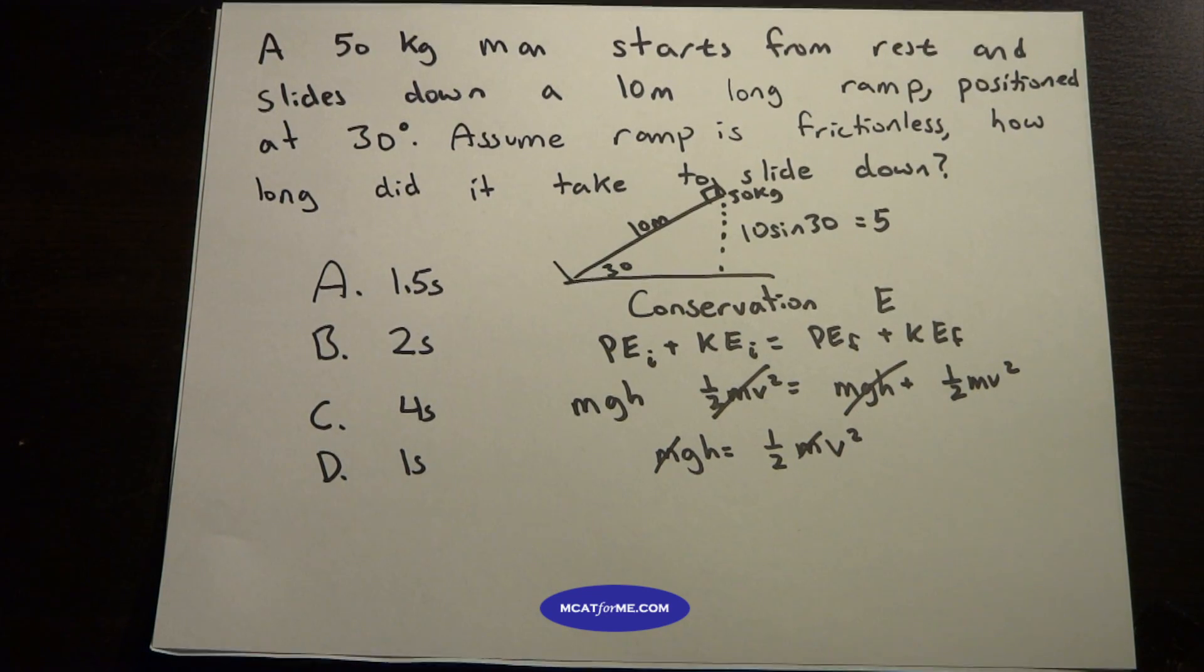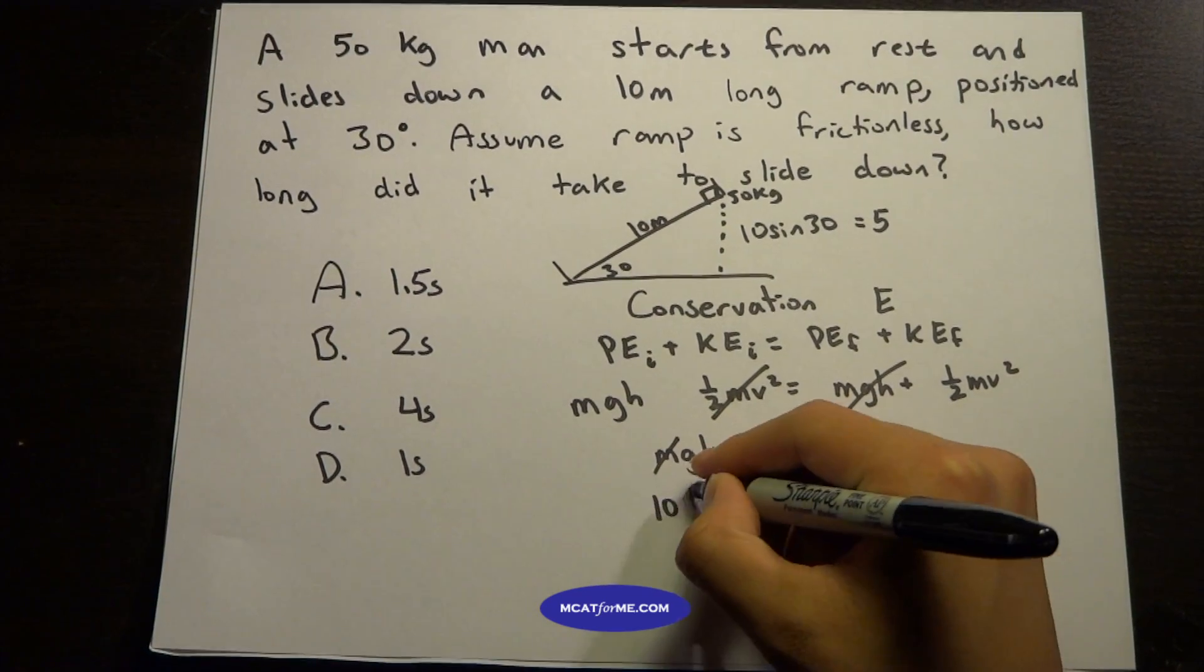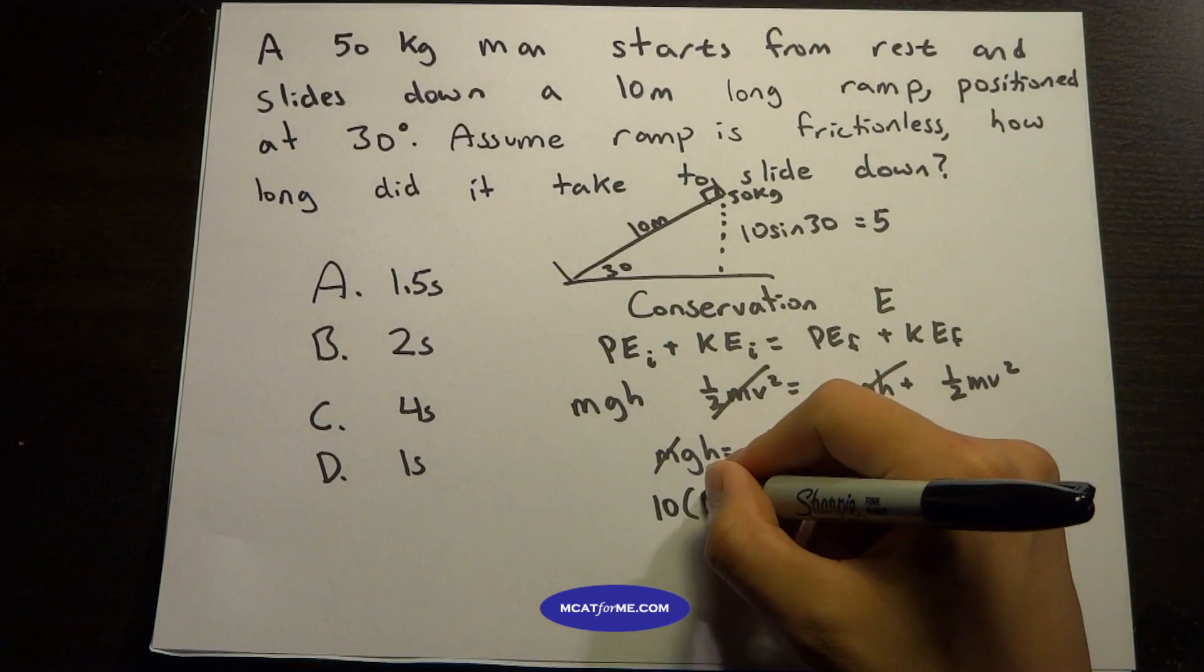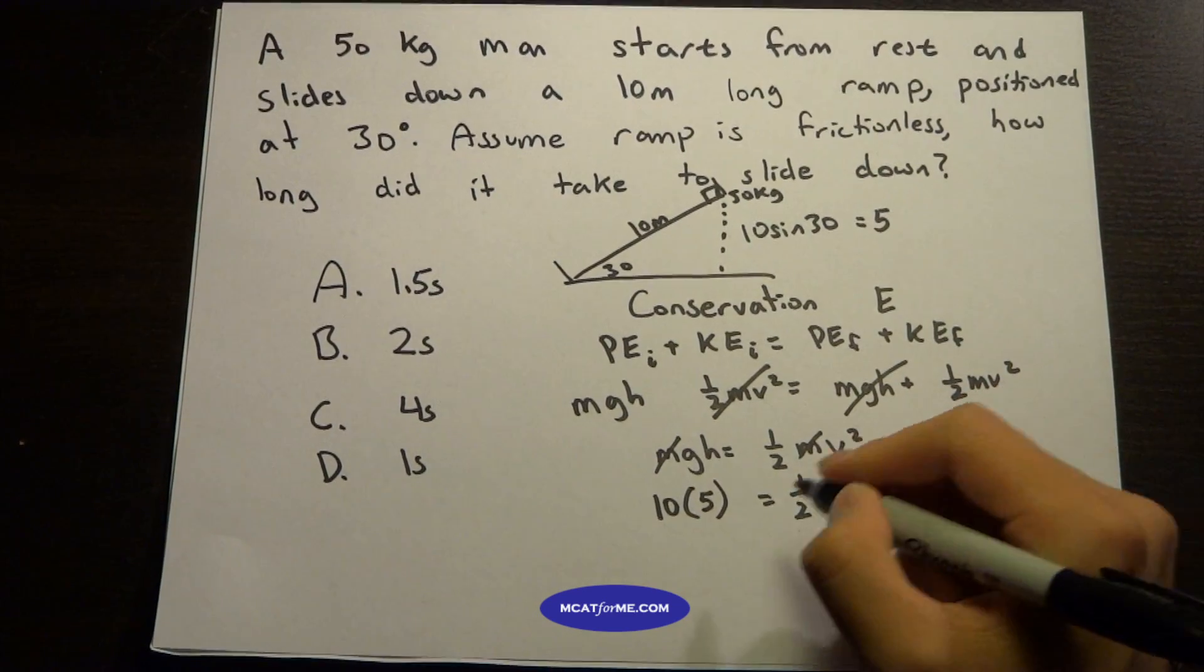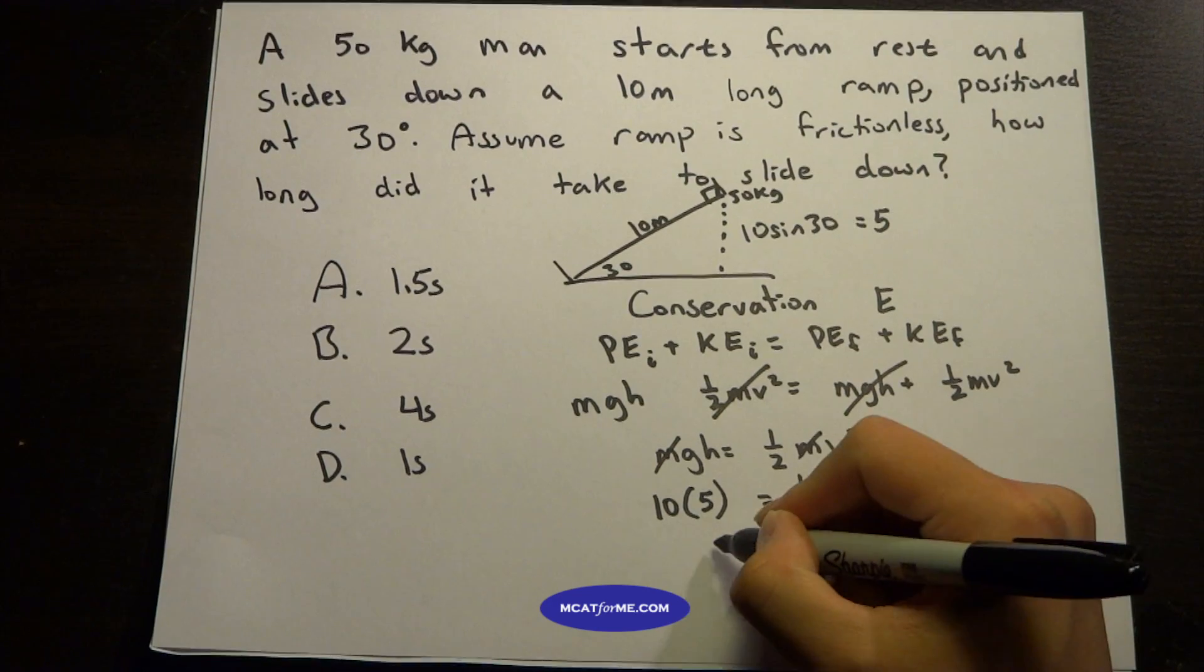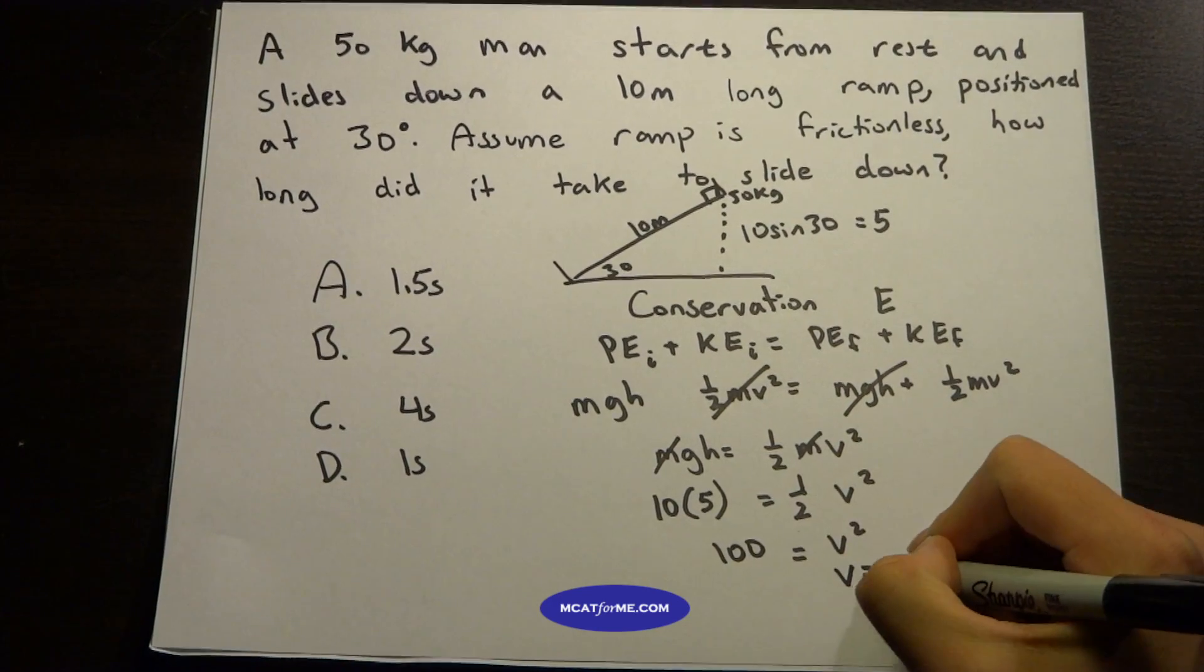So if we plug in the numbers: 10 times the height, which was 5, equals one-half v squared. We see that v squared equals 100, and v equals 10.